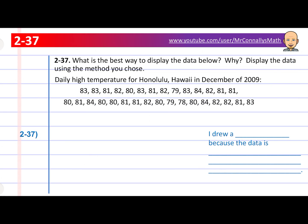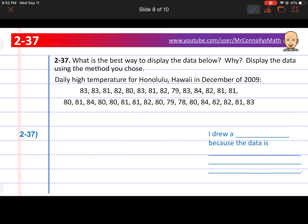237. What's the best way to display the data below? Why? Display the data using the method you choose. Daily temperature for Honolulu, Hawaii. What a nice place. Wish I could go there right now. So Honolulu, Hawaii is always between 83, 83, 79, 79. Looks like it's either in the 80s or in the late 70s. So temperature is pretty boring. It stays the same. Not too cold, not too hot. So let's think about the ways we could display this. We've got the stem and leaf plot, the dot plot, the bar graph, and the Venn diagram. Let's go ahead and eliminate the obvious that we're not going to use.